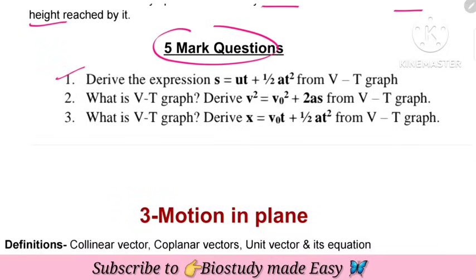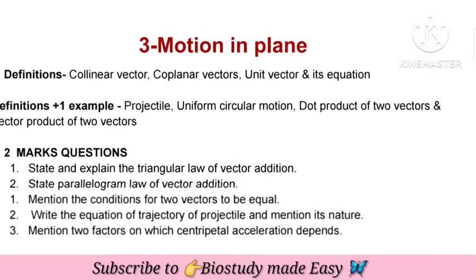Derivation: s = ut + ½at² using the v-t graph. Derive these expressions for speed and velocity equations using the v-t graph. Next, motion in a plane — another important chapter in 1st PUC physics.